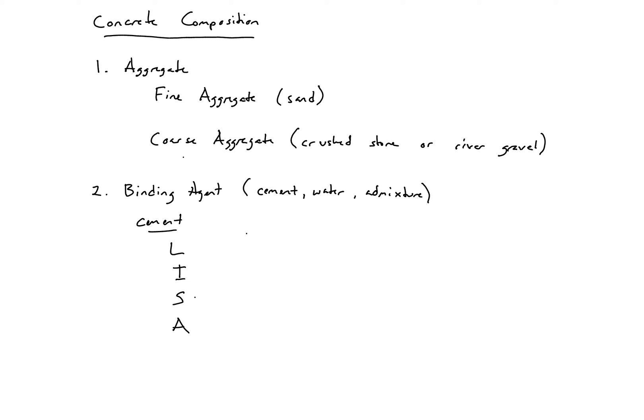So the L in LISA is some source of lime or calcium oxide. The I is some source of iron. The S is silica, and the A is alumina.